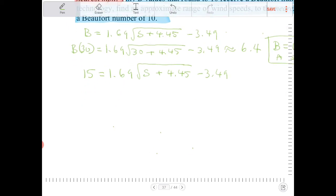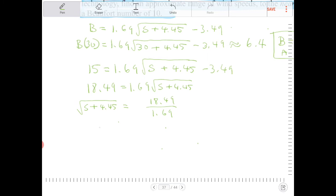To do that, we're going to add 3.49 to both sides. So we get 18.49 is equal to 1.69 square root of s plus 4.45. We're going to divide both sides by 1.69, and if we do, we'll end up with square root of s plus 4.45 is equal to 18.49 over 1.69. Let's square both sides.